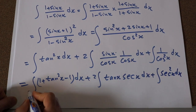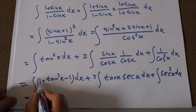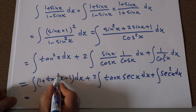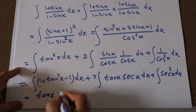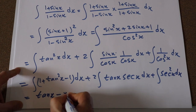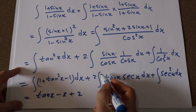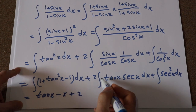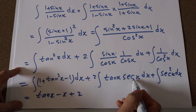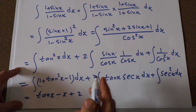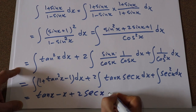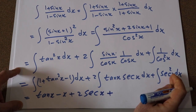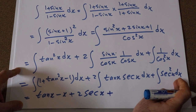Now this integral equals: the integral of tan²x is tan x minus x, plus 2 times the integral of tan x · sec x — from the table of integrals, that equals sec x — plus the integral of sec²x dx, which from the table of integrals equals tan x.